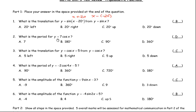For number 2, what's the period for y equals 7 cos x? It's just cos 1x, so the basic cosine or sine function has a period of 360 degrees, and so this one is no different. The 7 actually just changes the amplitude — it has an amplitude of 7 instead of 1 — but that has nothing to do with period. So the period would be 360 degrees, just like y equals cos x. D is the correct answer for number 2.